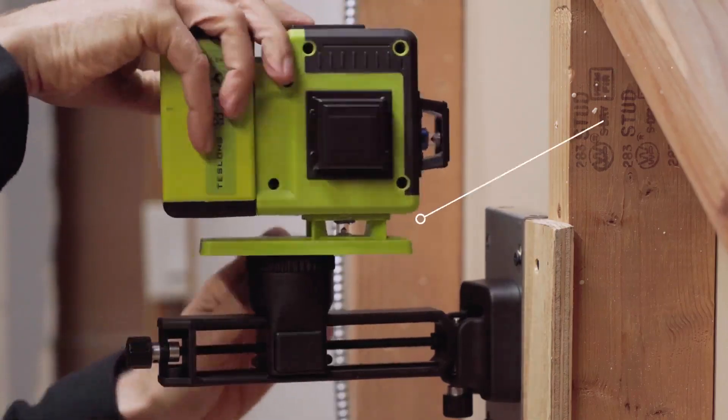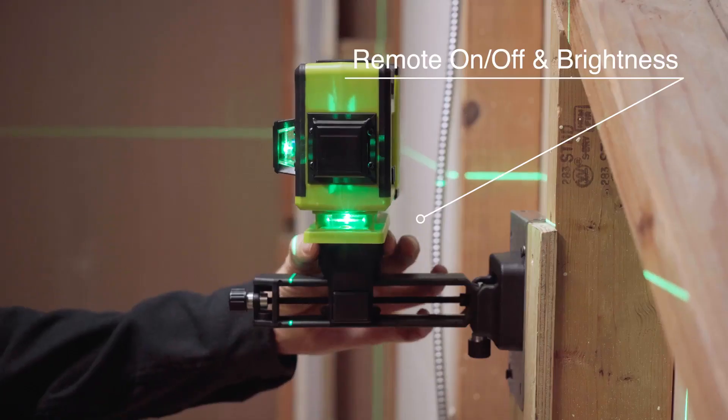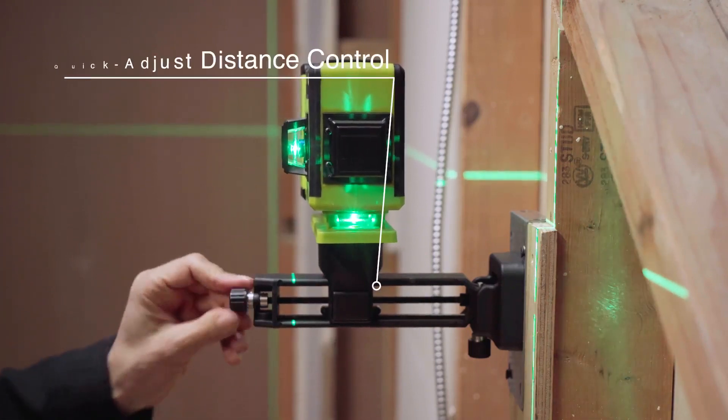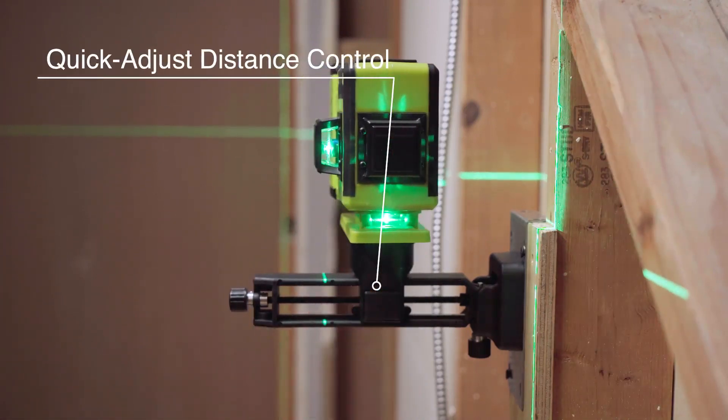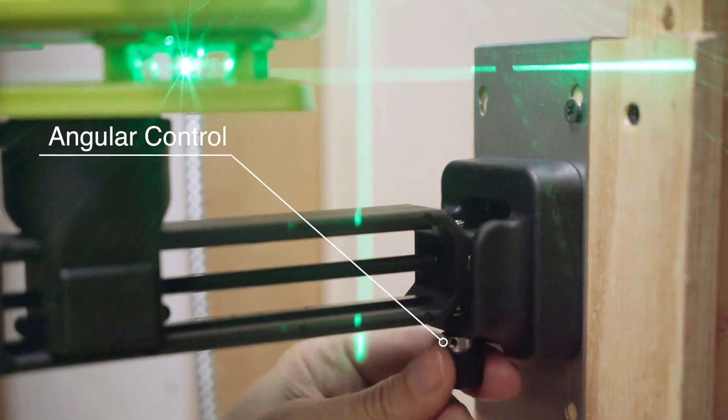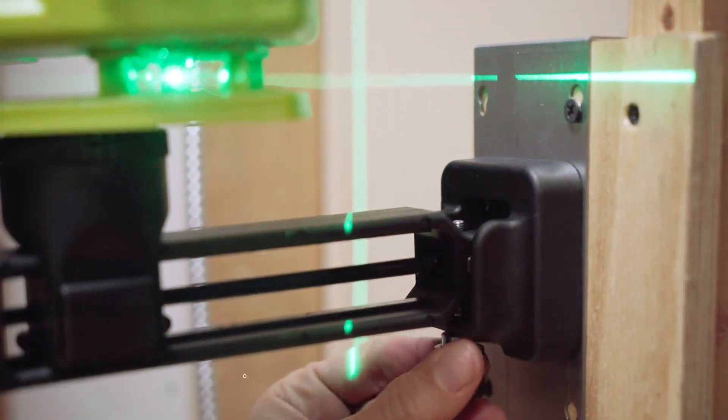The laser level threads on with a standard tripod thread. It has a distance adjustment as well as a quick adjust. There's also an angular control and a rotational control.